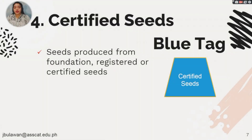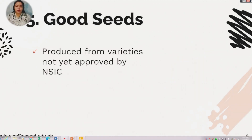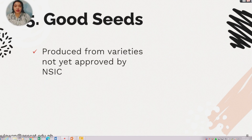The fourth one is the certified seeds. Seeds produced from foundation, registered, or certified seeds, and the tag color is blue. Good seeds are produced from varieties not yet approved by the NSIC, or the National Seed Industry Council. These five types of seeds are produced by the government and private sectors or private organizations.